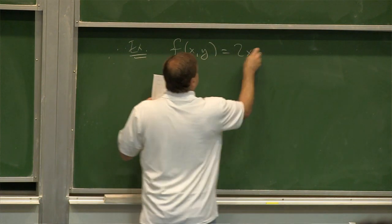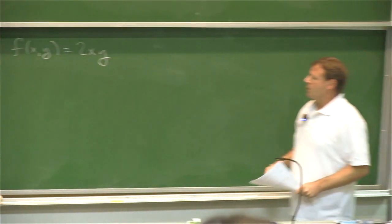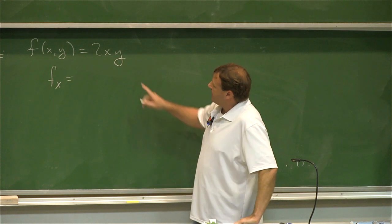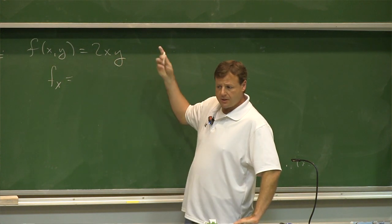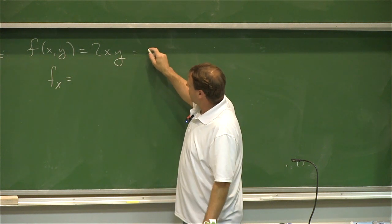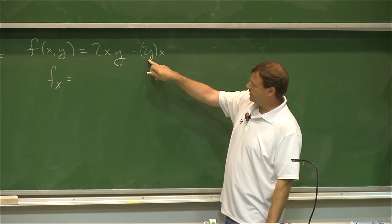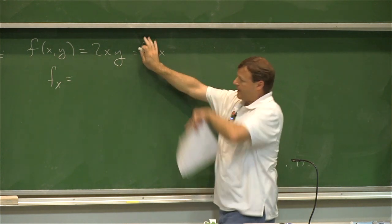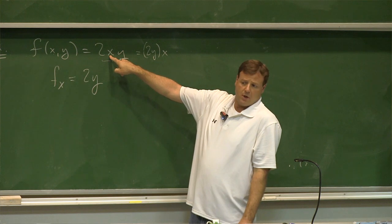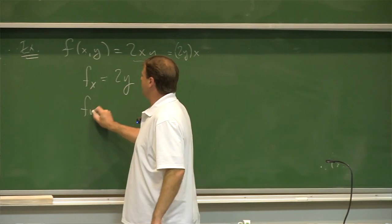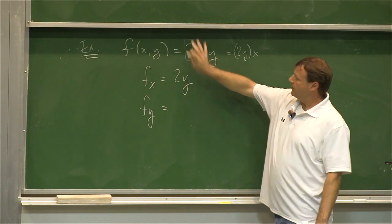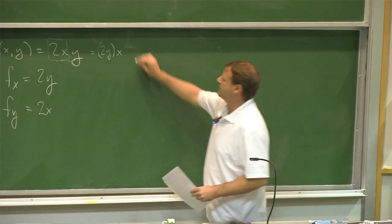Example: f of x, y equals 2xy. There are two derivatives to take. For f sub x, I think of 2y as a constant — it's like 2y times x — and the derivative of x is just 1, so f sub x equals 2y. For f sub y, I think of 2x as a constant, bring that along, and the derivative of y is 1, so f sub y equals 2x.